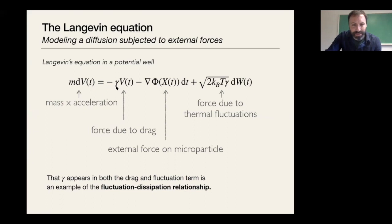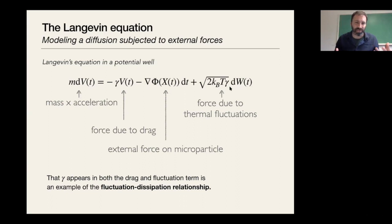The fact that the drag coefficient gamma appears both in the drag term and in the fluctuation amplitude is called the fluctuation-dissipation relationship. The same thing that causes the fluctuations — collisions of particles in the environment — also causes the drag when you try to push a particle through it. They must be in just the right balance to maintain movement over time.